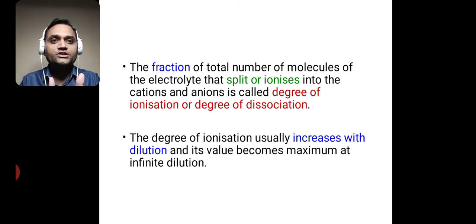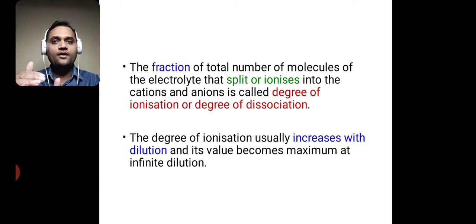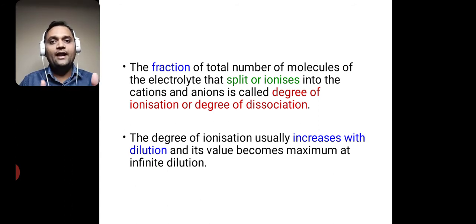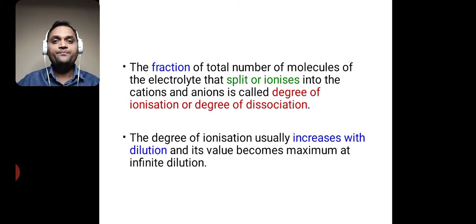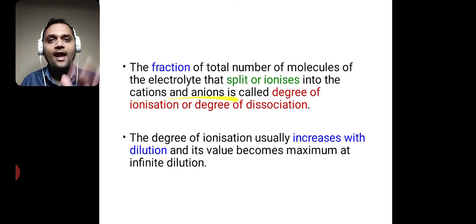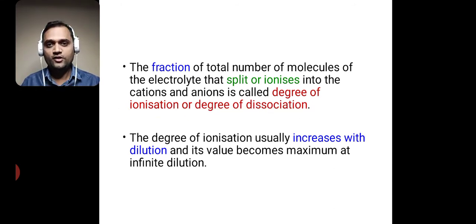The fraction of the total number of molecules of the electrolyte that split or ionize into cations and anions is called the degree of ionization or degree of dissociation. So if I have 100 total molecules and 50 undergo ionization, that 50 is my fraction.